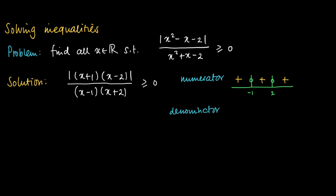Now look at the denominator. If we look at the denominator, then we see that the denominator is 0 at minus 2 and 1, and we have the following sign scheme: plus, minus, and a plus.